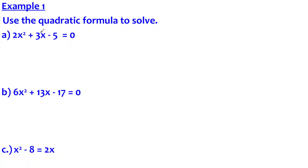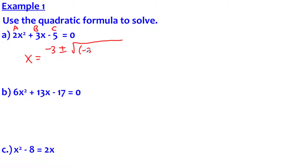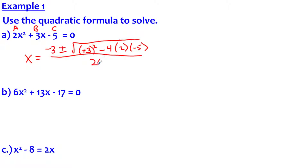Our first problem is 2x² + 3x − 5 = 0. The first thing to check is whether it's in standard form — and it is. So I'll identify a, b, and c. Be careful: c is actually negative 5, not positive 5. Plugging into the formula: negative b, so negative 3, plus or minus the square root of b squared — which is 3 squared — minus 4 times 2 times negative 5. That was 4ac, and this is all over 2 times a, which is 2 times 2.